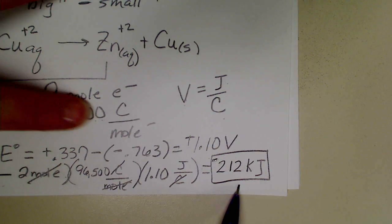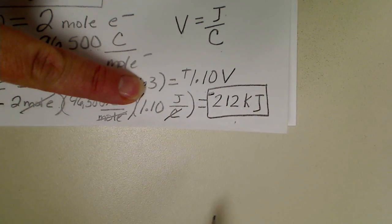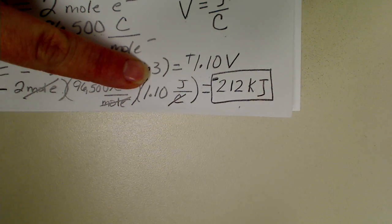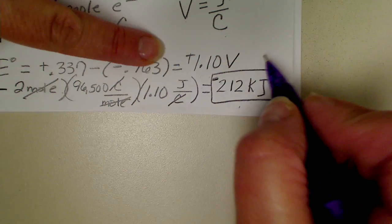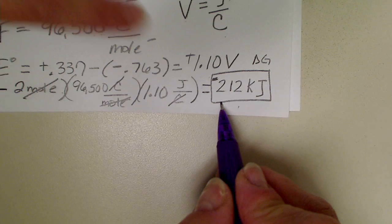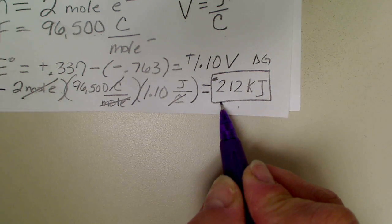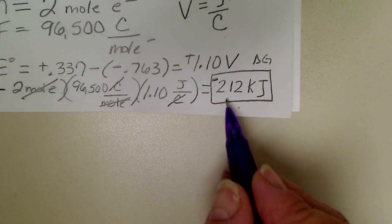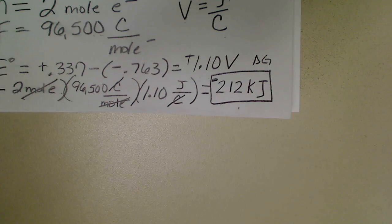In this case for an electrochemical cell, the change in Gibbs free energy will always be negative because of this negative sign. For this particular example, this was the delta G calculated for the reaction at standard temperature and pressure: negative 212 kilojoules.